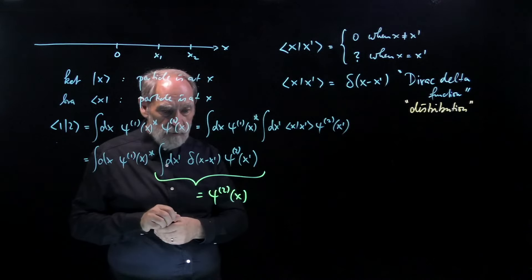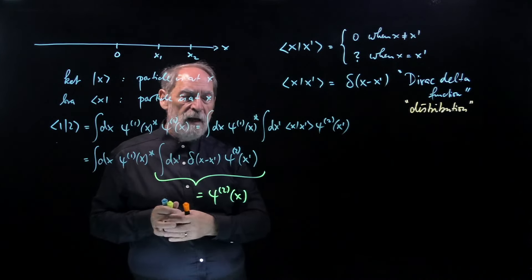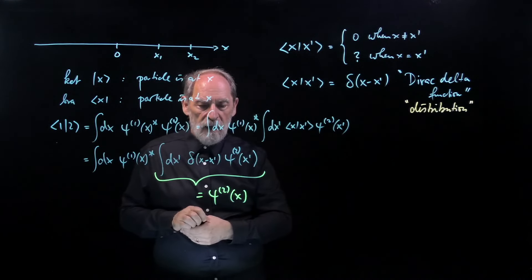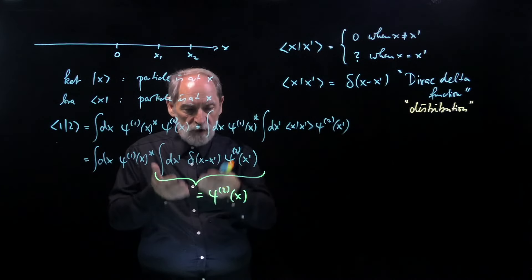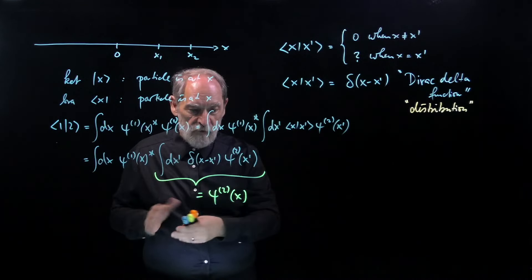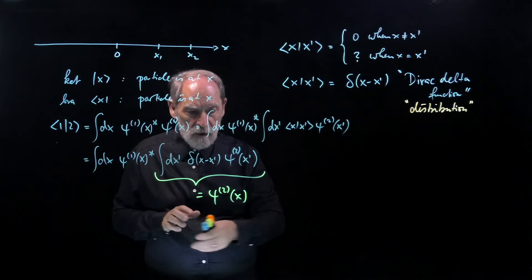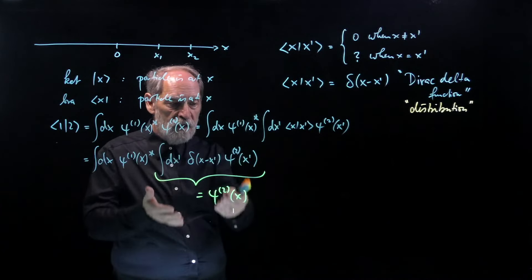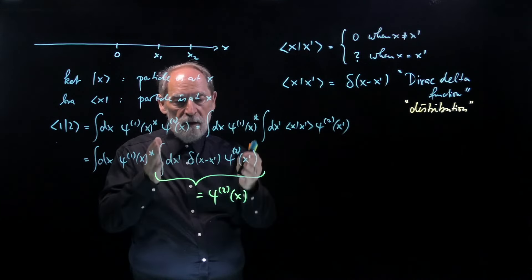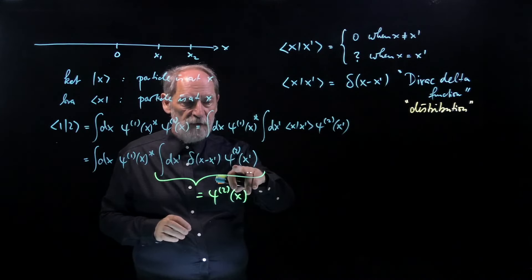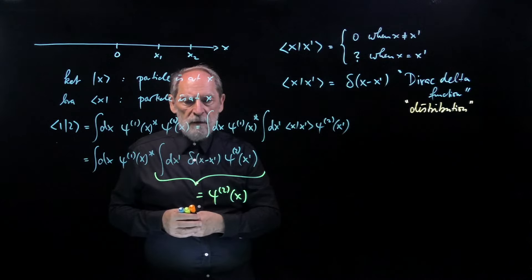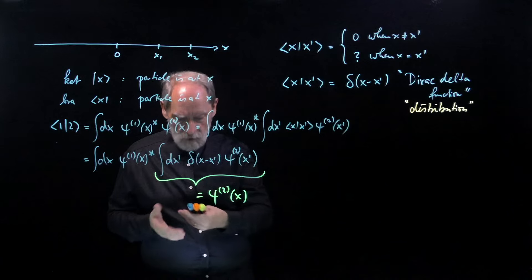For this to be meaningful, ψ₂(x) has to be a meaningful quantity, which means this function must be continuous in x. It cannot be that there is a place where it jumps, because then we don't know the value of the function at that position — approaching from smaller values gives one result, approaching from larger values gives a different one. So we cannot tolerate discontinuities. The integration with the delta function gives a meaningful result only if the function is continuous at the point selected by the delta function.